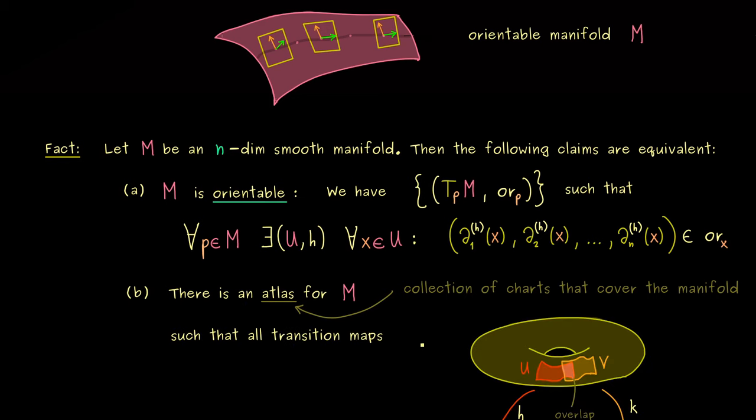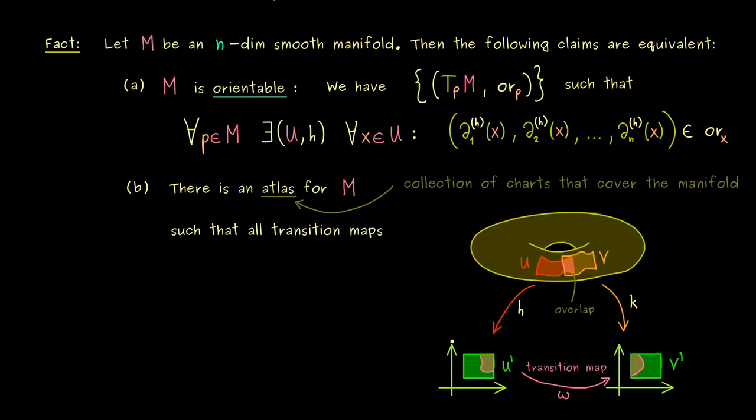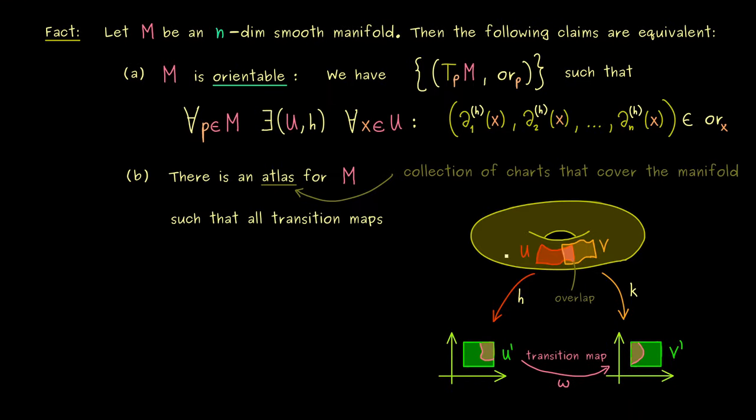Namely, we want that all the transition maps, which are clearly differentiable, should conserve our orientation. Hence, we are only interested in the differential of this omega, which means in the Jacobian. And the Jacobian matrix we usually denote by J_omega. And then we also go through all possible points x. And at this point, you already know, changing the orientation is measured with the sign of the determinant.